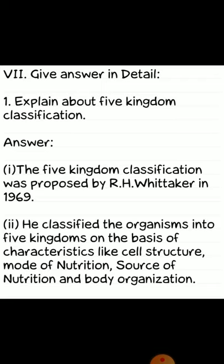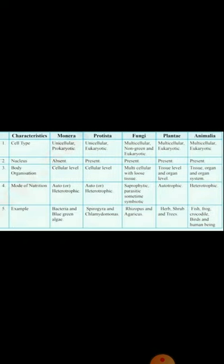Detailed answer section. First question: explain about five kingdom classification. Answer: the five kingdom classification was proposed by R.H. Whittaker in 1969. He classified organisms into five kingdoms on the basis of characteristics like cell structure, mode of nutrition, source of nutrition, and body organization. The five kingdoms are: Monera, Protista, Fungi, Plantae, and Animalia.